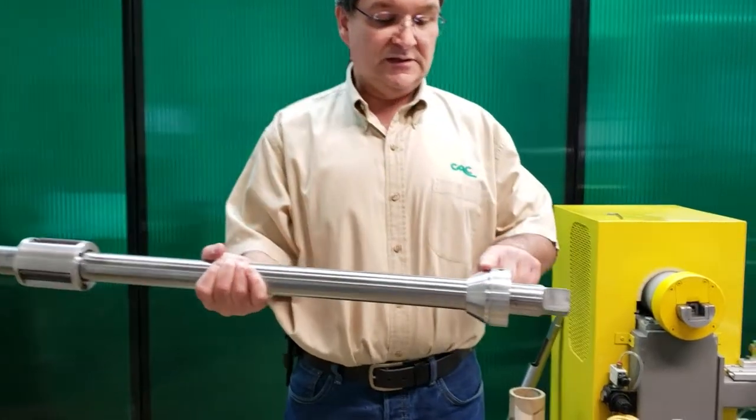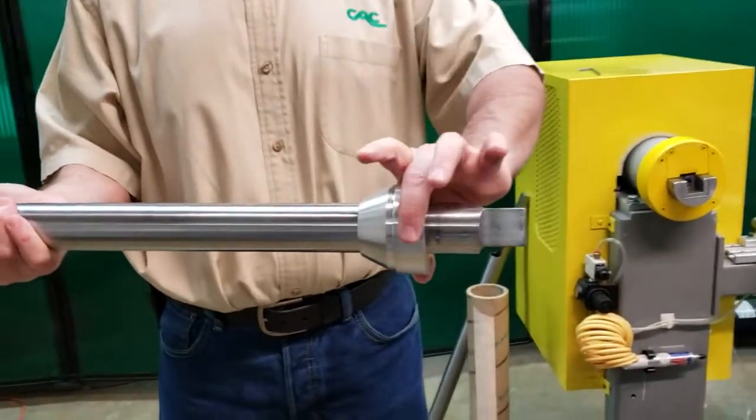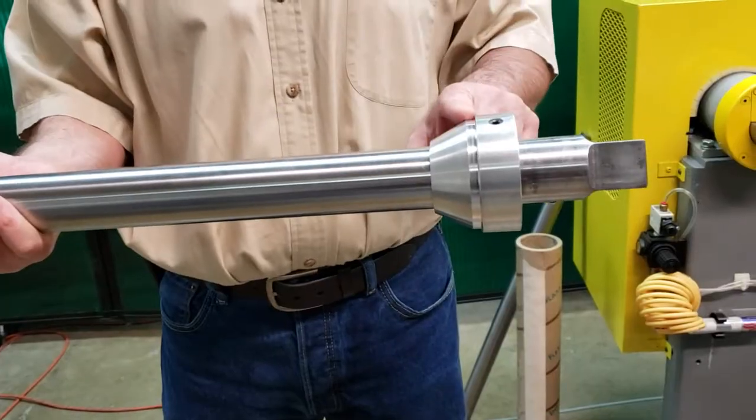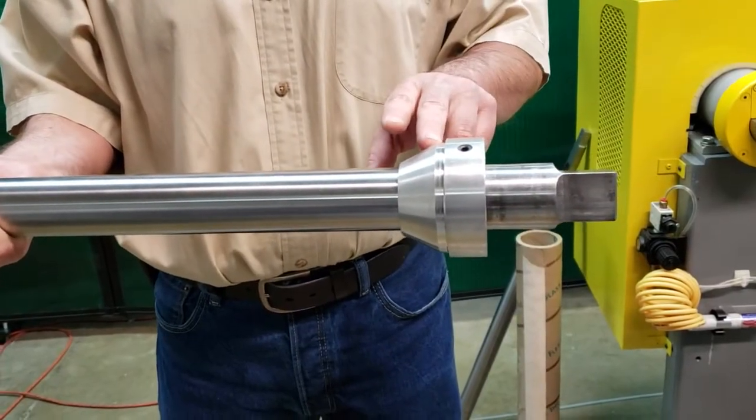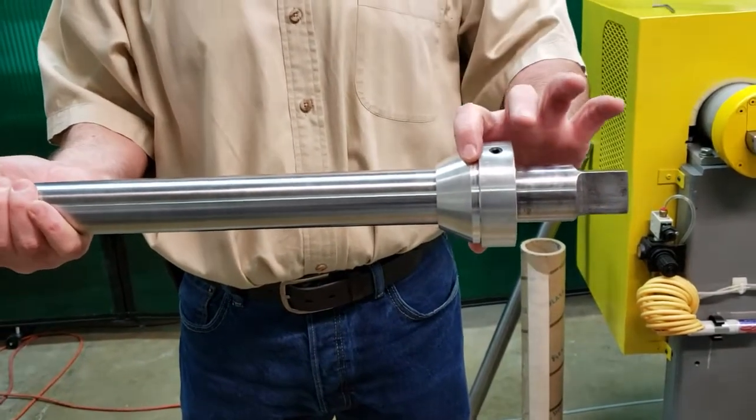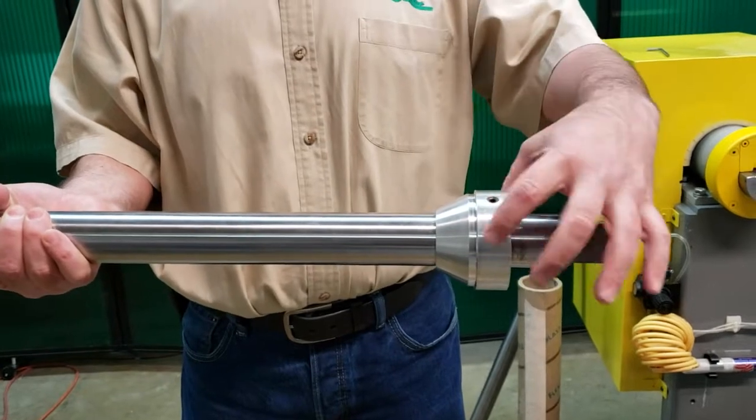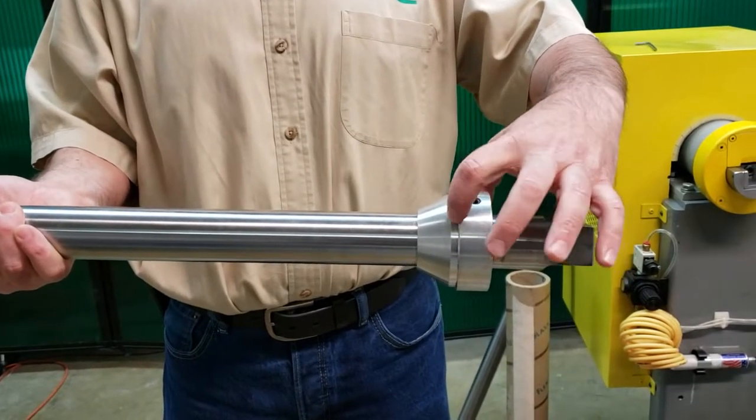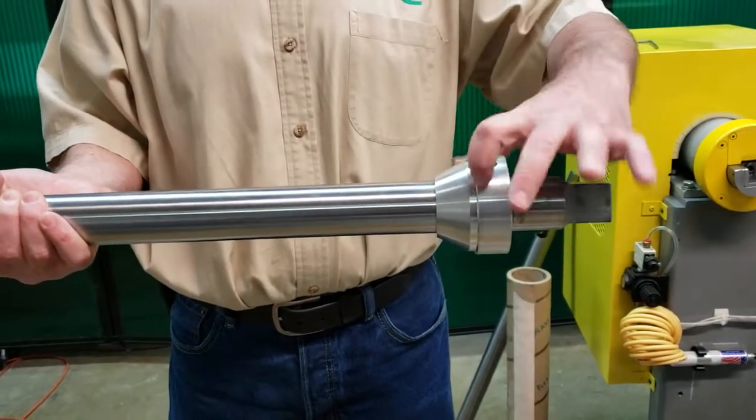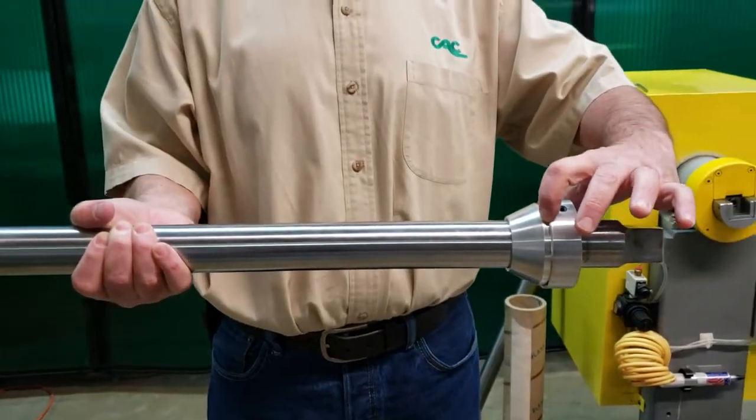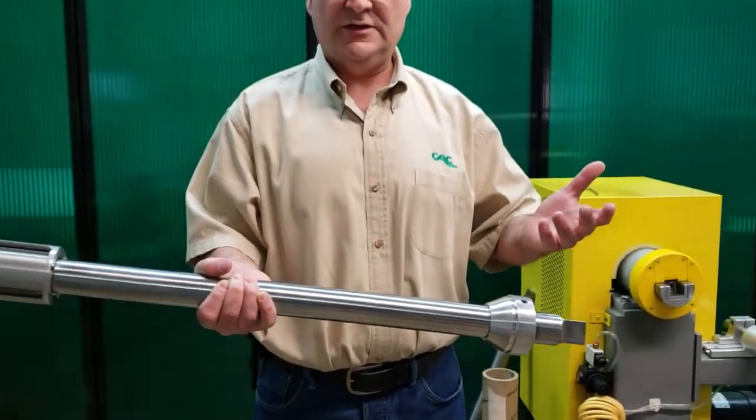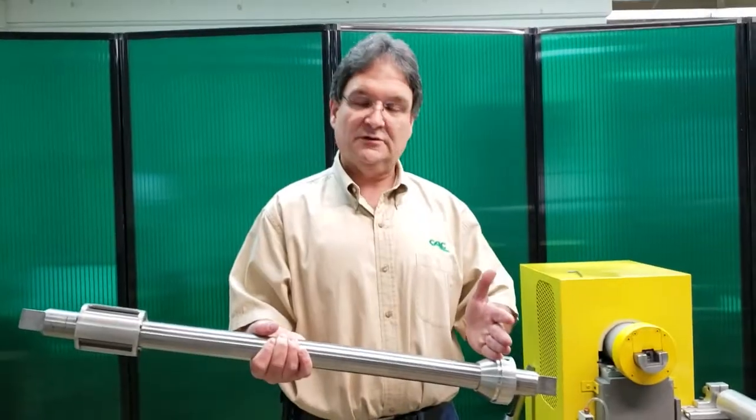The end plug, this is CAC's end plug. We manufacture this. This just supports the opposite end of the core. It doesn't deliver any torque to your core. It just holds the core in place on this end, and also includes a core stop flange, so that when you slide the core on, the core will stop in this position every time, making your setup for your operators very easy. So you always know where the edge of your material is in your machine.